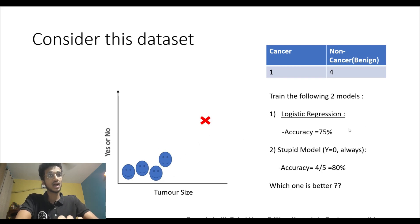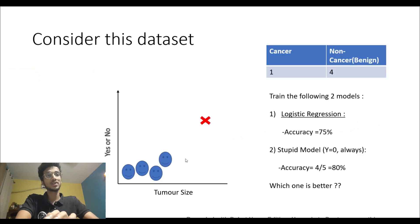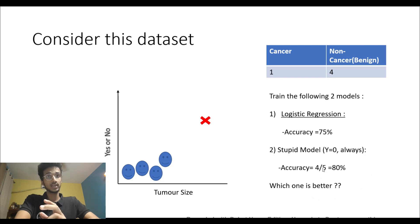Say this is a very stupid model which is blindly predicting any given tumor as non-cancerous without even looking at it. In this case that would give you an accuracy of four out of five, because in the five examples in the dataset, four are non-cancerous anyway. So if you blindly predict non-cancerous you're going to be right four out of five times — an accuracy of 80%.